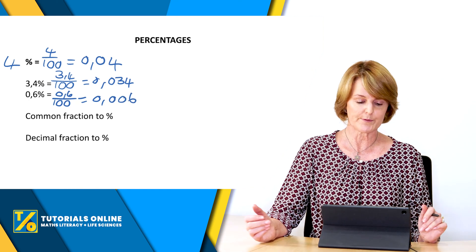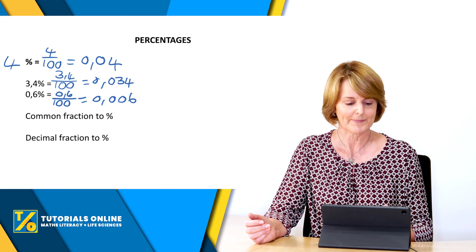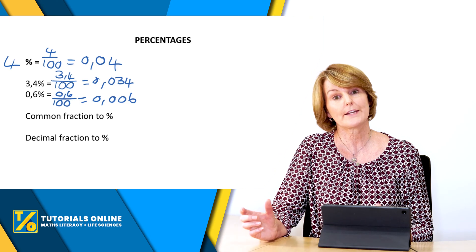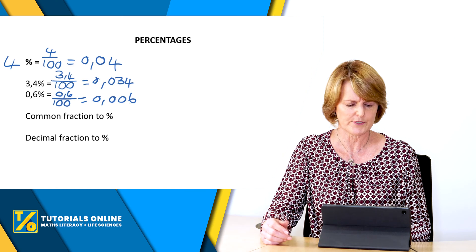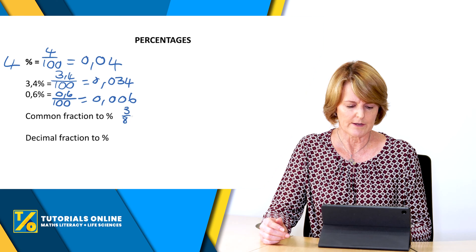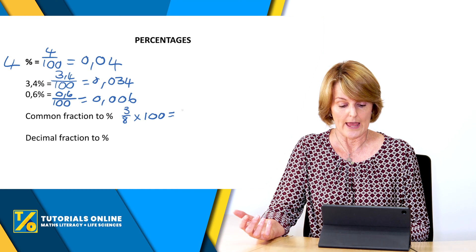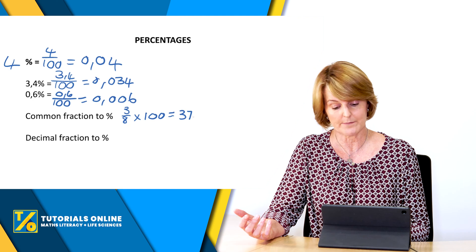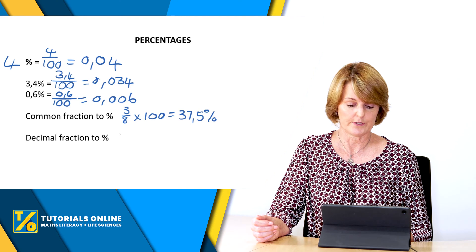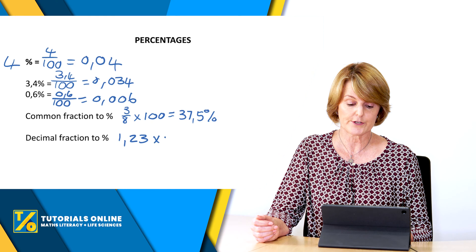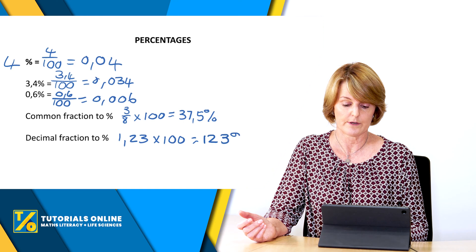A couple more things before we move on to more difficult percentage concepts. When you have a common fraction and need to convert it to a percentage — for example, three over eight — you multiply by 100, so three divided by eight times 100 gives you 37,5%. For a decimal fraction like 1,23, you also multiply by 100, giving you 123%.